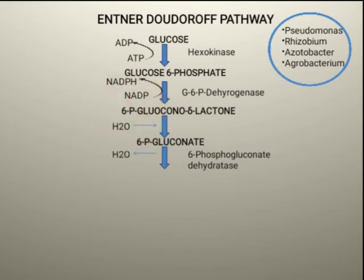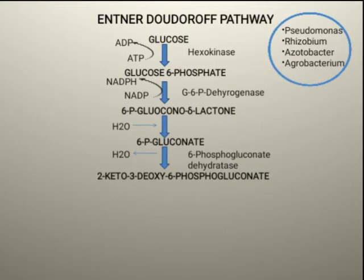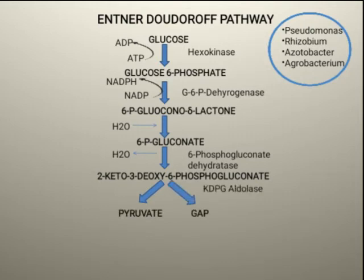6-phosphogluconate is converted into 2-keto-3-deoxy-6-phosphogluconate, which we call KDPG. KDPG is then directly split into pyruvate and glyceraldehyde-3-phosphate. The enzyme involved in this step is KDPG aldolase.